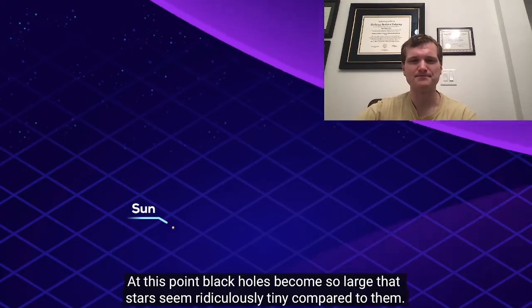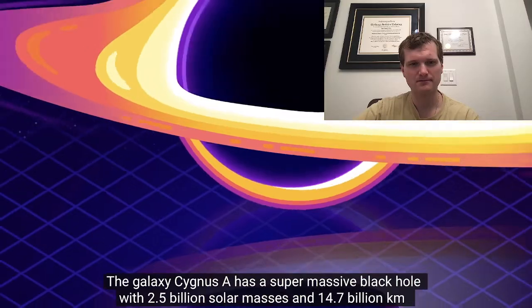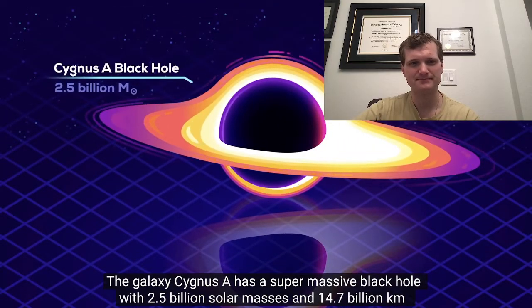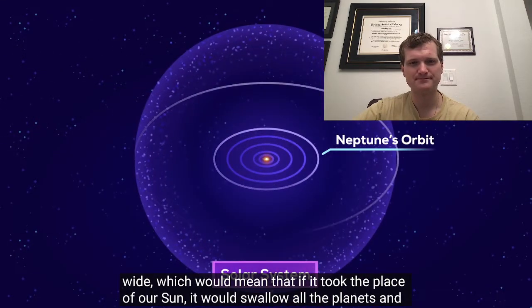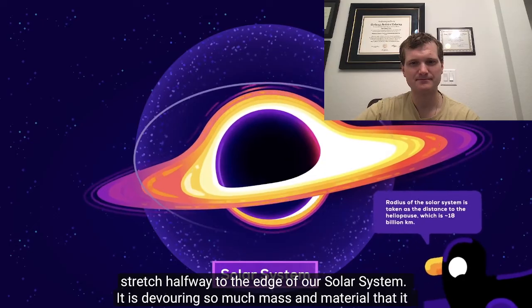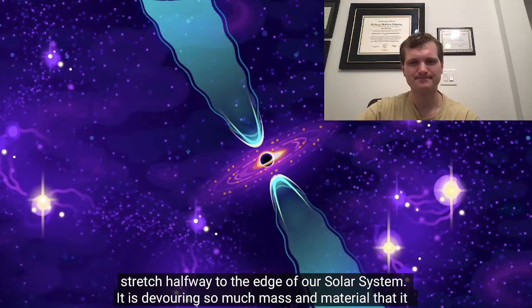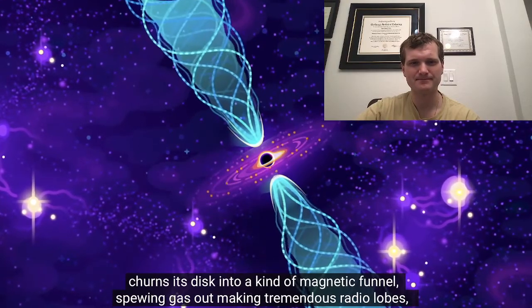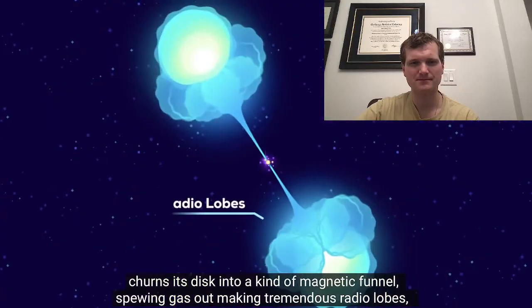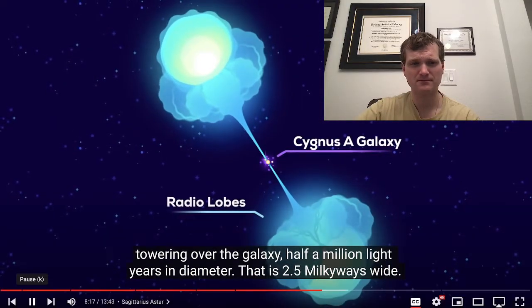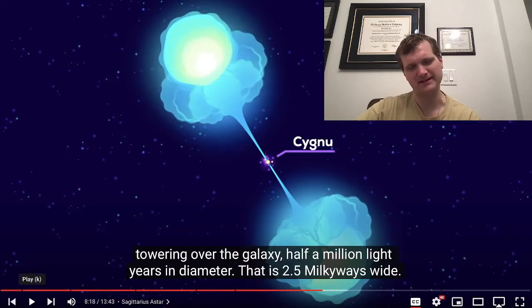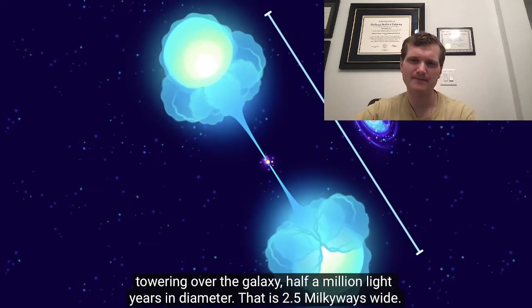Black holes so large that stars seem ridiculously tiny compared to them. The galaxy Cygnus A has a supermassive black hole with 2.5 billion solar masses and 14.7 billion kilometers wide, which would mean that if it took the place of our sun, it would swallow all the planets and stretch halfway to the edge of our solar system. It's devouring so much mass and material that it churns its disk into a kind of magnetic funnel, spewing gas out, making tremendous radio lobes towering over the galaxy half a million light-years in diameter. That is fascinating. That's two and a half Milky Ways wide.